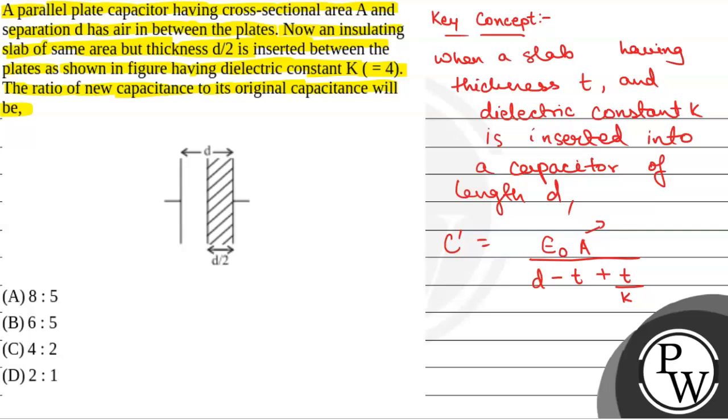A is the area of the slab and capacitor plates, epsilon 0 is the permittivity of free space, d is the length of the capacitor, t is the thickness of the slab, and k is the dielectric constant.